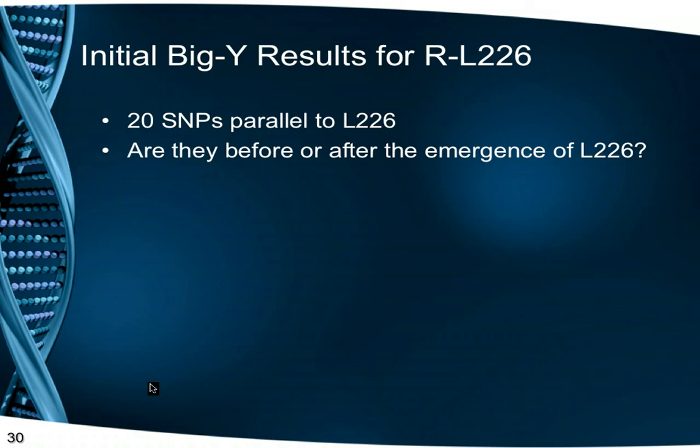We have no way of knowing the order of the appearance of each of these SNPs, that is, if any or all of the SNPs originated before or after L226. However, further testing by other L226 men may reveal more in the future. Just last week, I've been advised of a person that seems to prove negative for L226. However, while DYS 459 is different, DYS 464 is the same as our group, so he may well come in partway down that list.